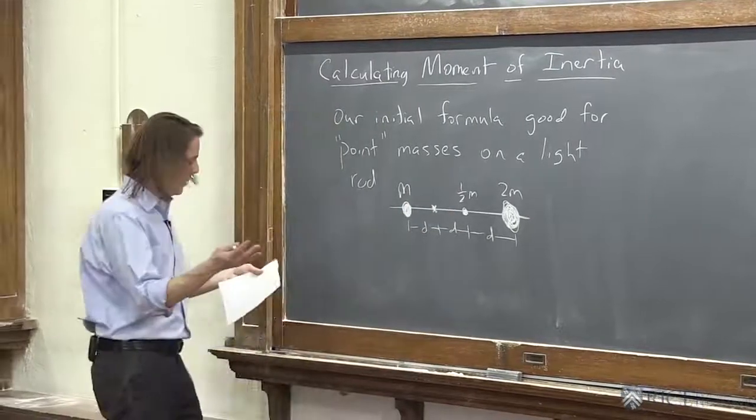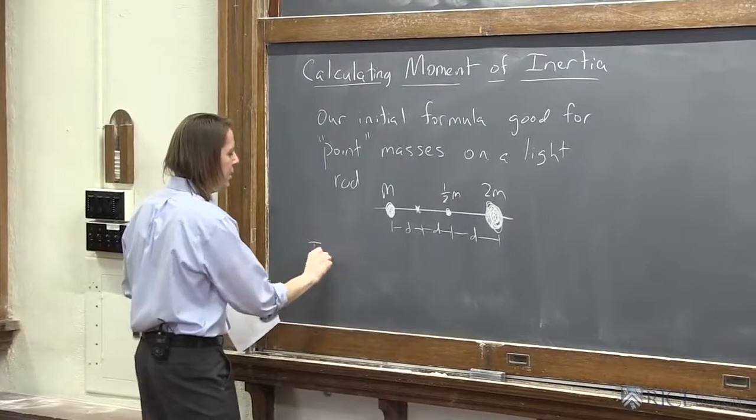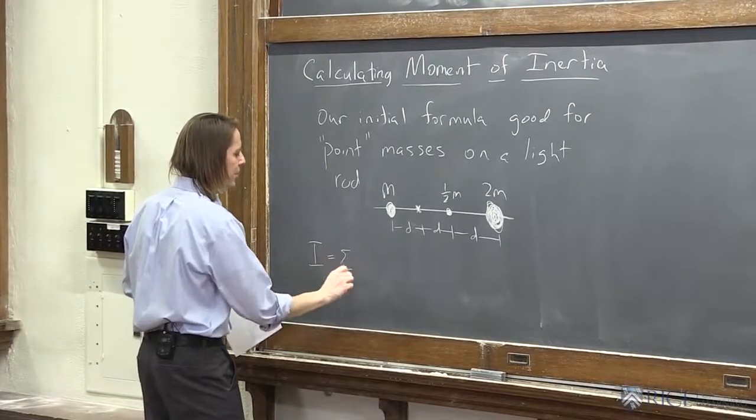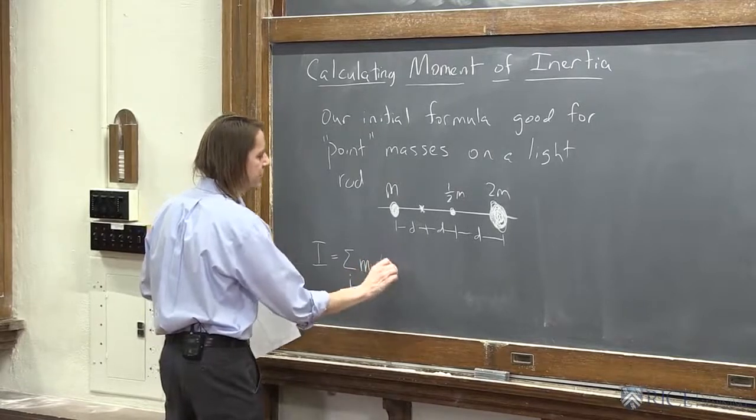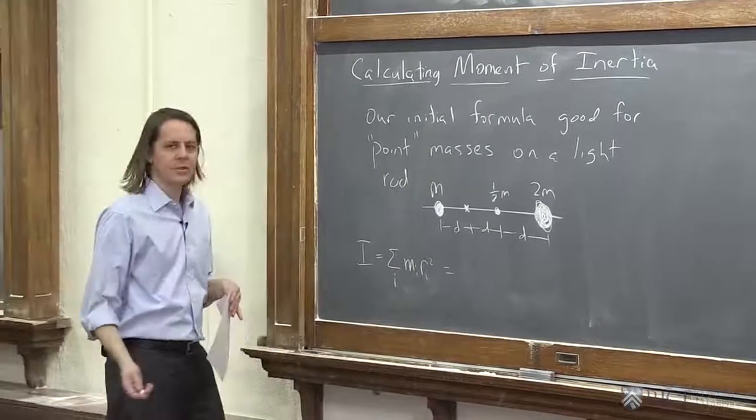So we want to use our formula. It was that the moment is the sum over all i of each mass i, each distance from the axis squared. So let's just do them one at a time.